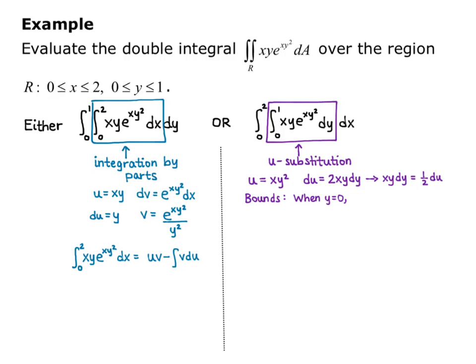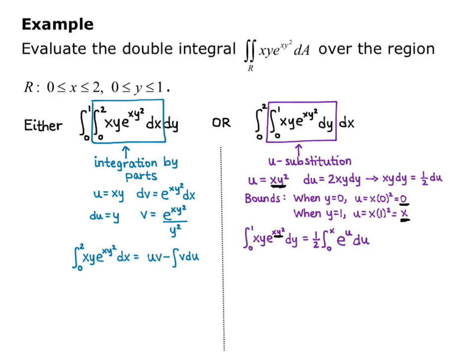Now change the bounds using the u function. When y = 0, u = x·0² = 0, so the lower bound stays 0. When y = 1, u = x·1² = x, so the upper bound becomes x. The integral from 0 to 1 of xy·e^(xy²) dy becomes (1/2) times the integral from 0 to x of e^u du. We can now evaluate with respect to u directly without back-substituting.